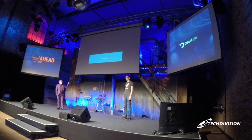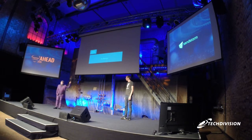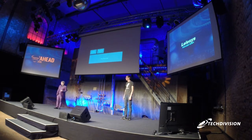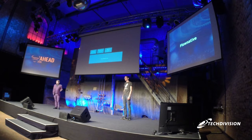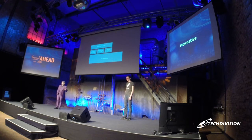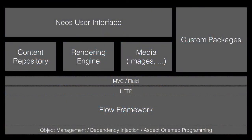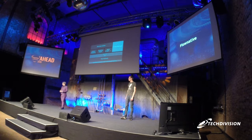We're starting at the base of all this — the Flow framework. To get a rough overview: you have the content repository on top, the rendering engine, TypoScript, parts of Fluid, media management, the user interface on top which is the client side, and custom packages fill the gap to add any functionality you need. I will start with the low-level stuff and go through MVC, Fluid, HTTP, object management, dependency injection, and aspect-oriented programming.